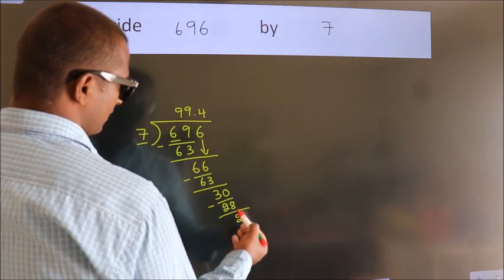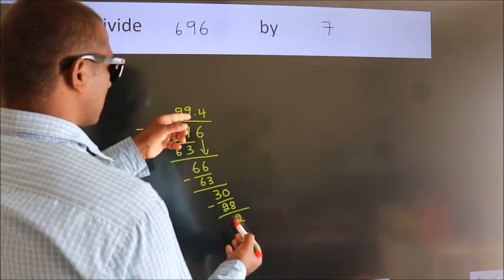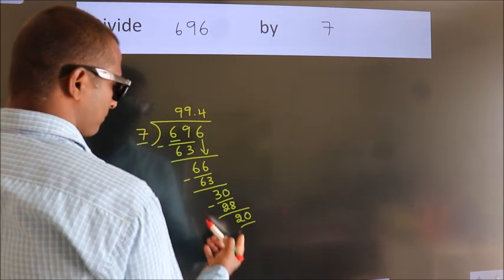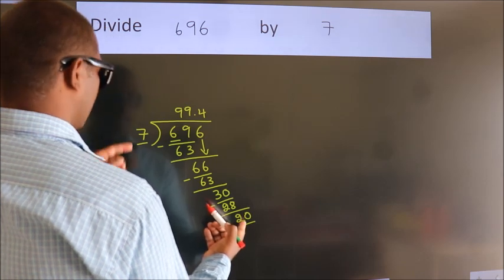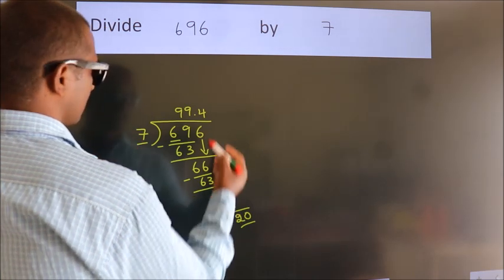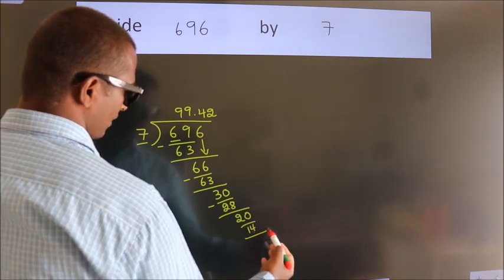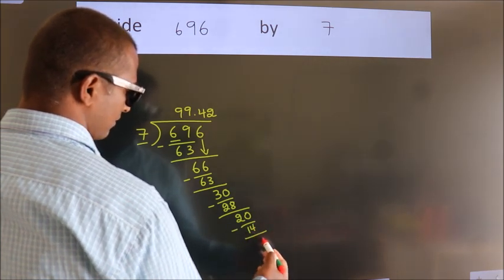After this, we already have the decimal, so directly take 0, so 20. A number close to 20 in the 7 table is 7 twos, 14. Now we subtract. We get 6.